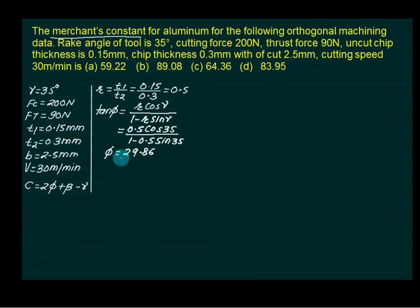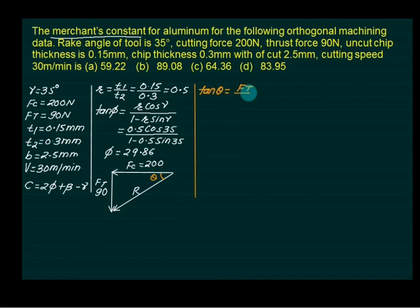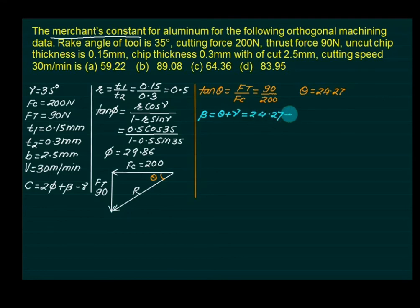Next, we find beta. The angle theta is given by tan(theta) equals Ft/Fc equals 90/200, so theta equals 24.27 degrees. Since beta equals theta plus gamma, we get beta equals 24.27 plus 35 equals 59.27 degrees.